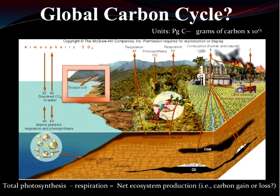I want you to focus on the difference between terrestrial photosynthesis and respiration: total photosynthesis minus respiration equals net ecosystem production. It's the amount of carbon terrestrial ecosystems store or lose over a year. Looking at this conceptual diagram, the difference is two petagrams of carbon — meaning the world's terrestrial ecosystems are storing roughly two petagrams of carbon per year. That's a positive net ecosystem production, which makes the one petagram of erosional loss a much more significant term.